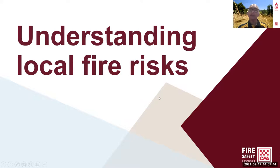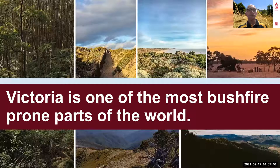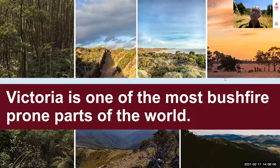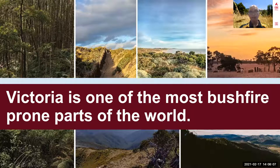We're going to take you through the elements of the Victorian landscape. As you can see from this slide, the landscape across Victoria and across Australia varies considerably — we can have areas of grassland, bushland, mountainous forest, and farmland which is quite extensive. Victoria is one of the most bush-prone parts of the world, often compared with California in the US, and we are sitting in an area of high risk.